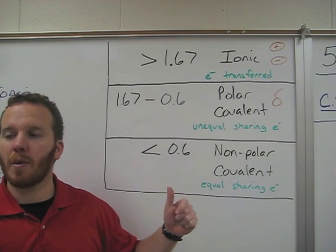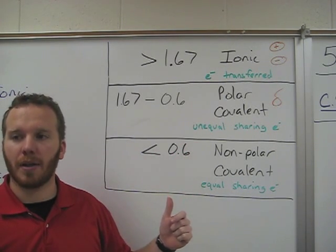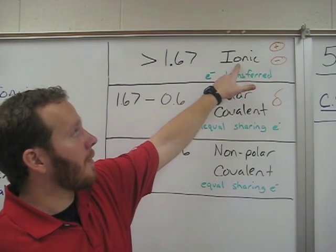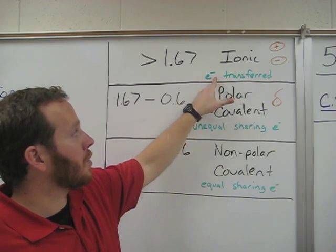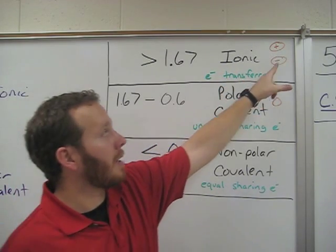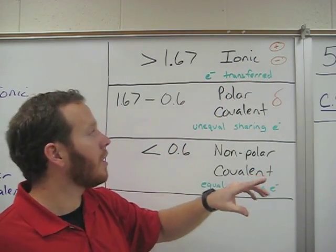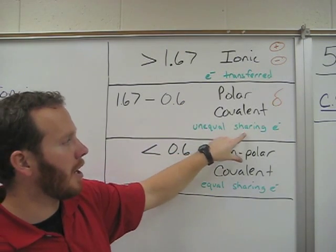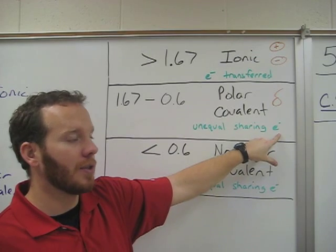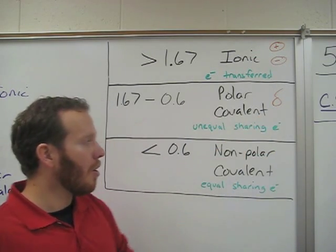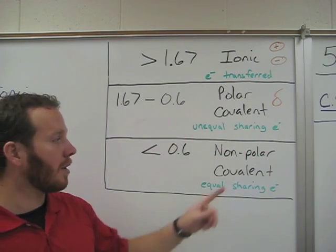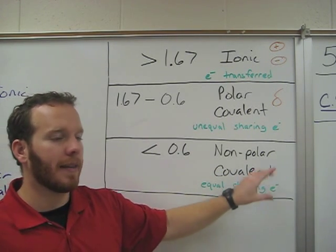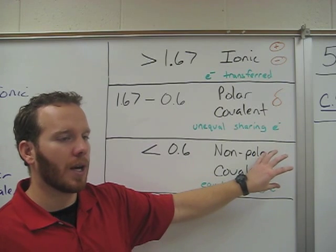We use this chart to determine what type of bond occurs between two elements. There are three choices: an ionic bond, which means the electrons are transferred and results in a positive or negative charge; a polar covalent bond, which means there's an unequal sharing of electrons and results in a partial charge; or a non-polar covalent bond, which is an equal sharing of electrons and means there will be no charge on the compound.